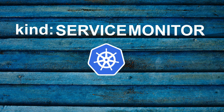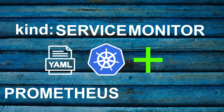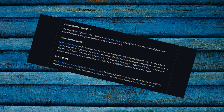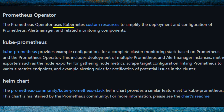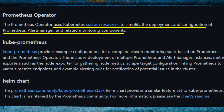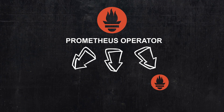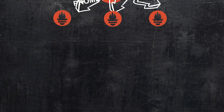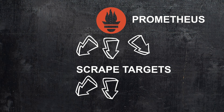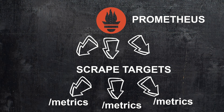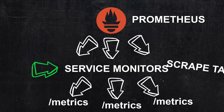Service Monitors is a Kubernetes object introduced by the Prometheus operator. The Prometheus operator uses Kubernetes custom resources to simplify the deployment and configuration of Prometheus, Alert Manager, and other related monitoring components. When you use the Prometheus operator, you can easily deploy Prometheus instances and configure scrape targets that scrape your pods or custom metric endpoints. Service Monitors is what helps us set up these scrape targets.